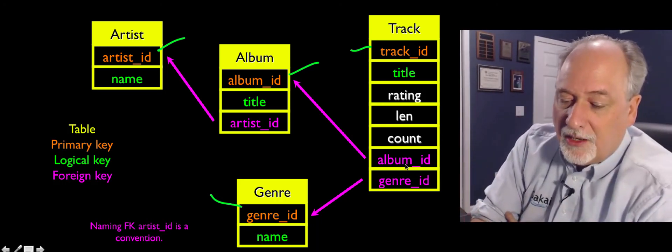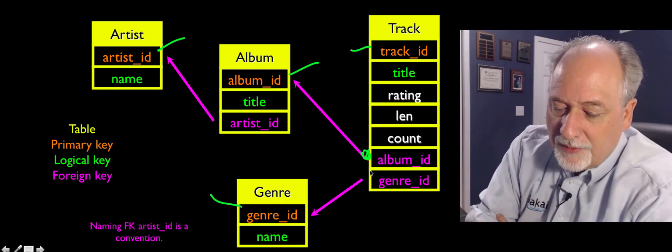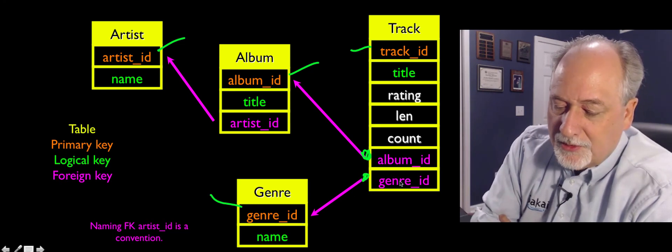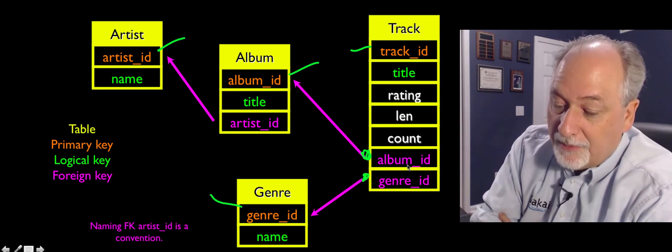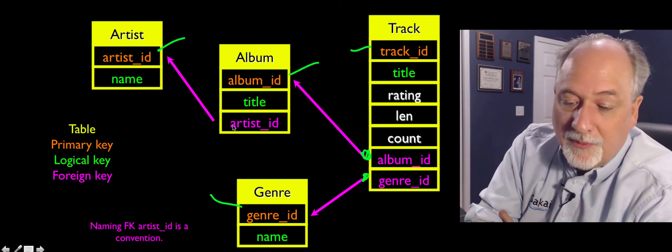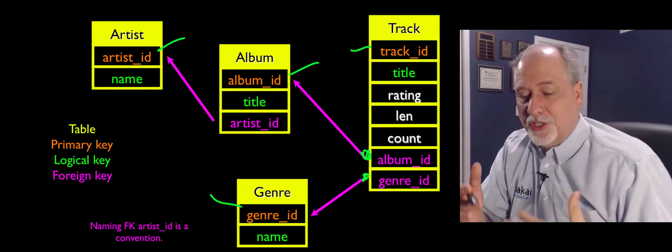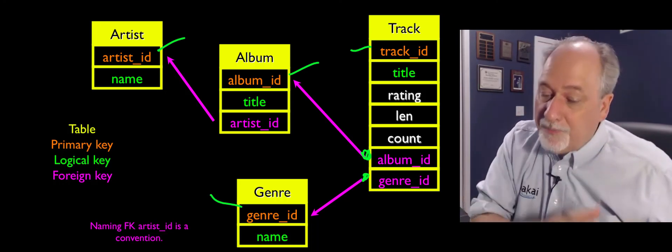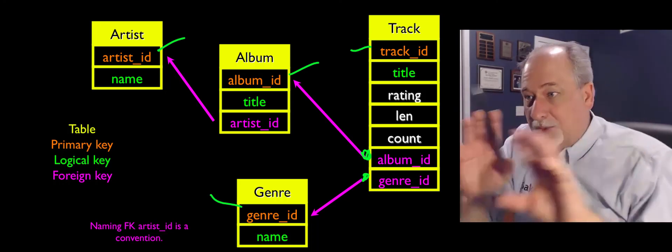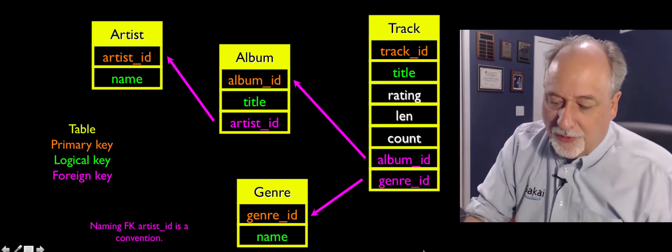And then for each of the arrows, we've got starting points and ending points. So we have the track that points to both a genre and an album. And then the album points to an artist. So you see it's kind of a very mechanical translation from the picture of logical relationships between the objects that our application is working with.